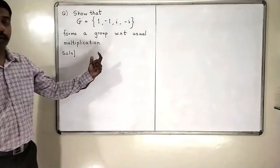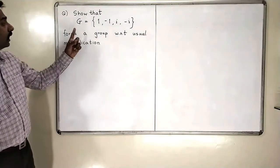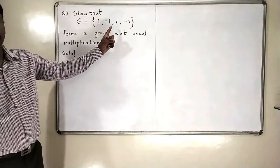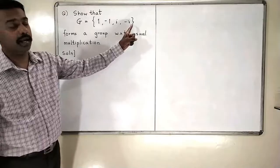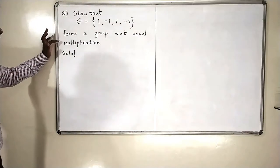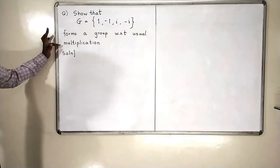Let us go to the fourth problem now. The set G is having four elements: 1, minus 1, i, and minus i. And I have to show that this set forms a group with respect to usual complex multiplication.